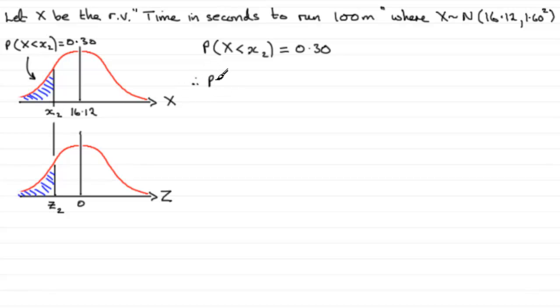So therefore, we can just put this in, the probability of Z being less than Z2, well that's got to equal 0.30.